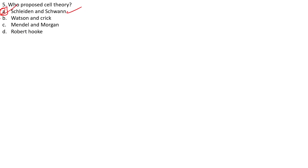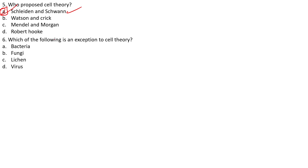Question 5: Who proposed cell theory? Options: Schleiden and Schwann, Watson and Crick, Morgan and Mendel, Robert Hooke. The answer is A: Schleiden and Schwann. Question 6: Which of the following is an exception to the cell theory? Options: bacteria, fungi, lichen, virus. The answer is virus — all living organisms are made up of cells, with the exception of viruses.